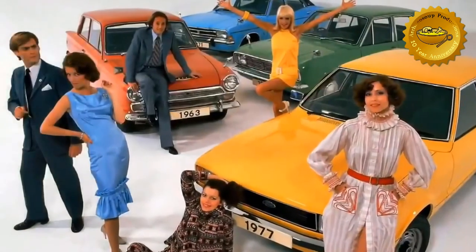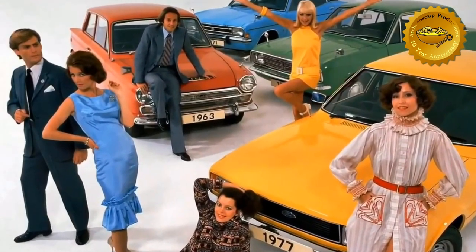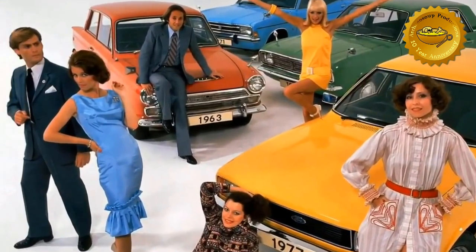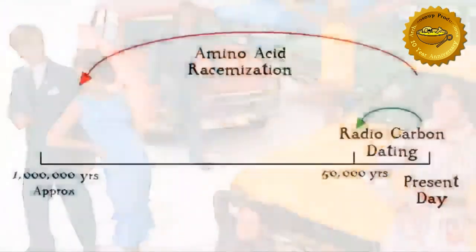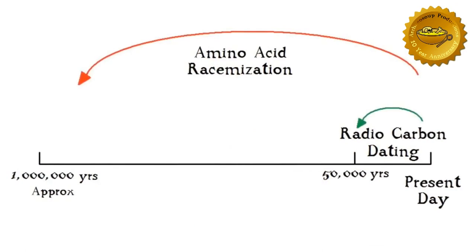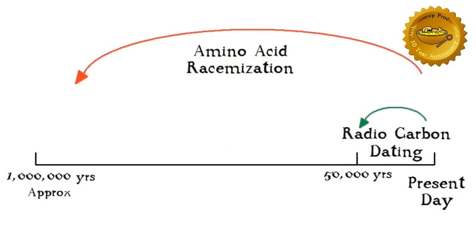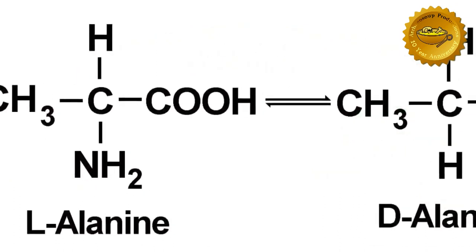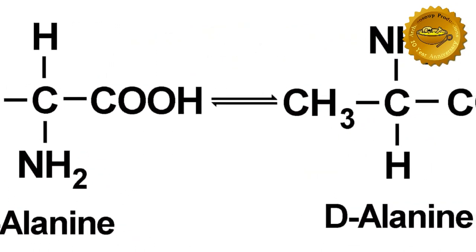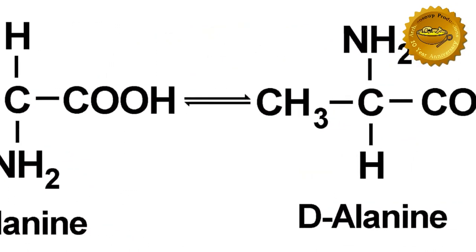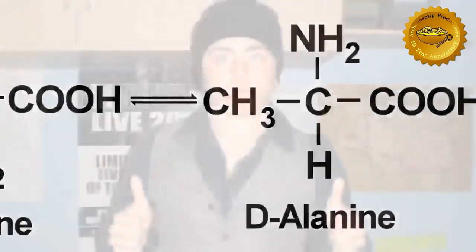It was early in the 1970s that a new exciting technique was developed. Amino Acid Racemization, as it was called, could reach much further back in time than radiocarbon dating. It relied upon observations of the change in amino acids in living organisms. This new technique was well received by archaeologists — a new way to date sites is always a good thing.